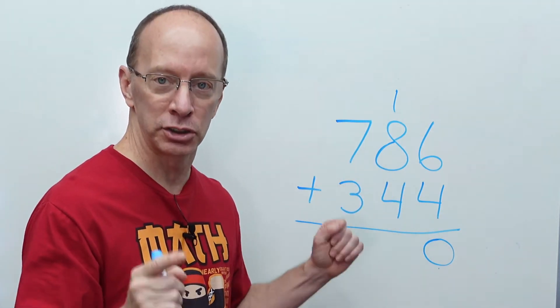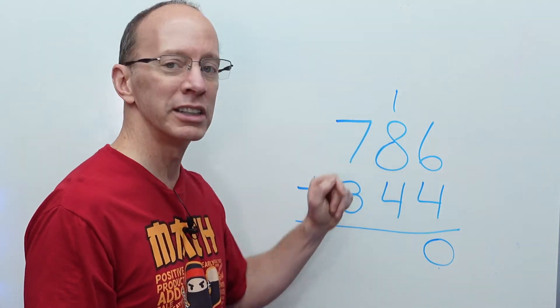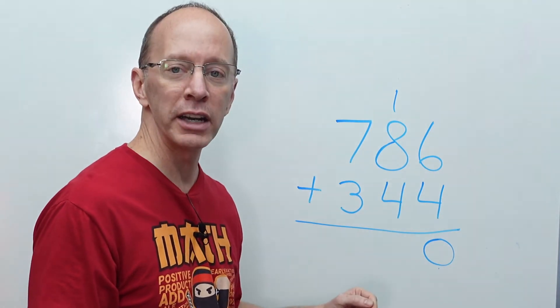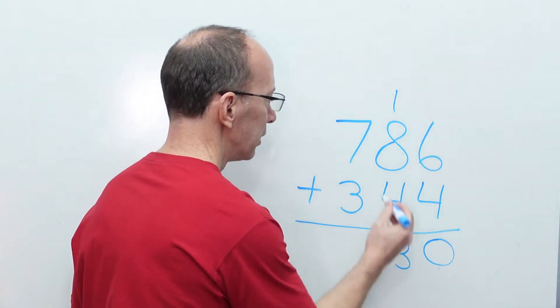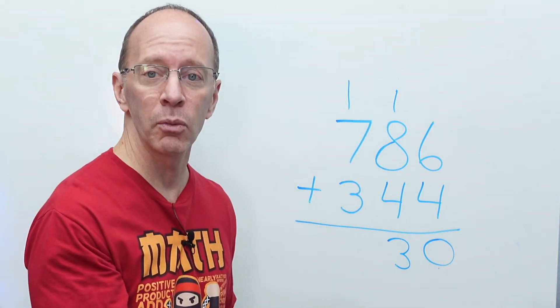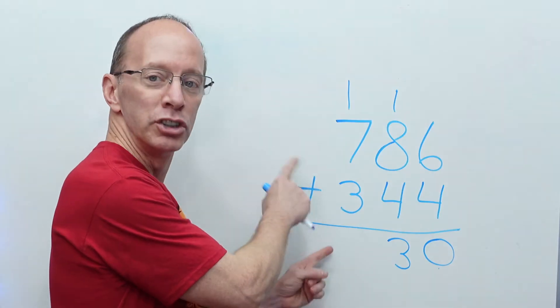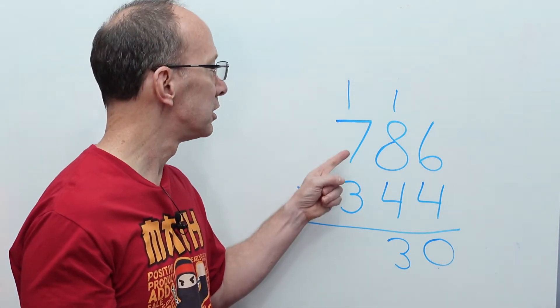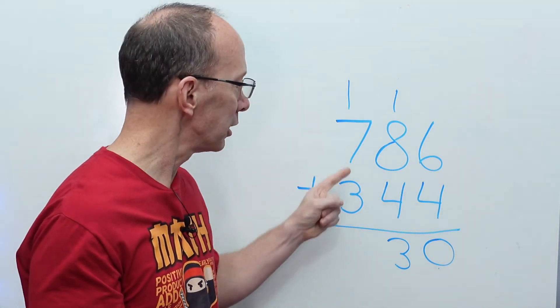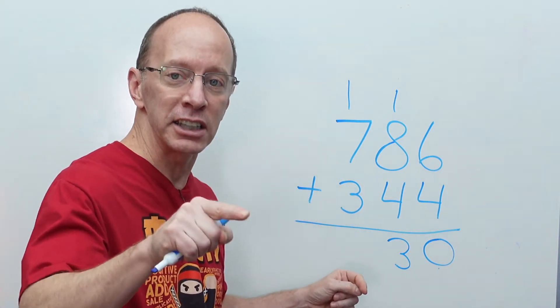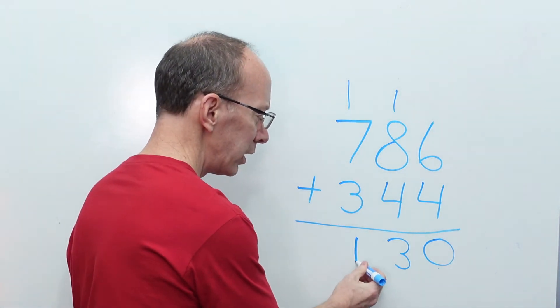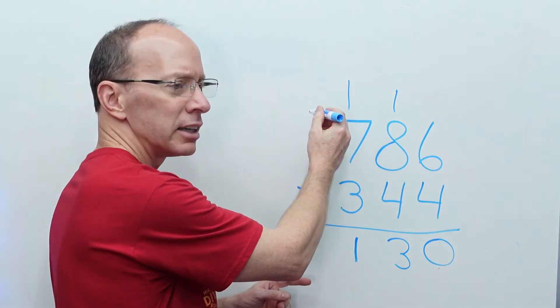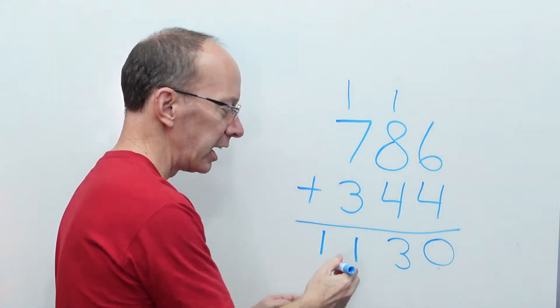All right. Let's add the tens. Let's do it. 8 plus 1 is 9. 9 plus 4 is 13. Put the 3 right here. Carry the 1. All right. We got a lot of numbers in the hundreds place. Don't get nervous. We can do it. 7 plus 1 is 8. 8 plus 3, 8, 9, 10, 11.